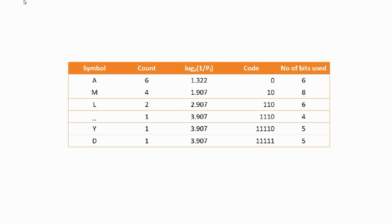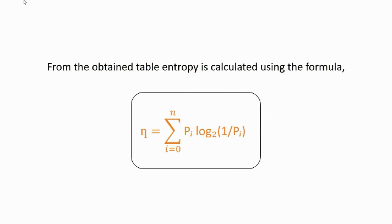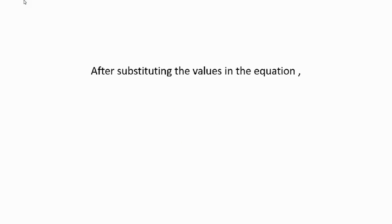Similarly, the values for M, L, space, Y, and D are calculated and tabulated. The formula for entropy is: η = Σ P · log(1/P) to base 2, summed from i = 0 to N. The values from the table are substituted into this equation. Entropy represents the average amount of information per symbol, or equivalently the minimum average number of bits required to represent each symbol. After substitution, the entropy η is 2.2062, meaning 2.2062 bits are required per symbol.